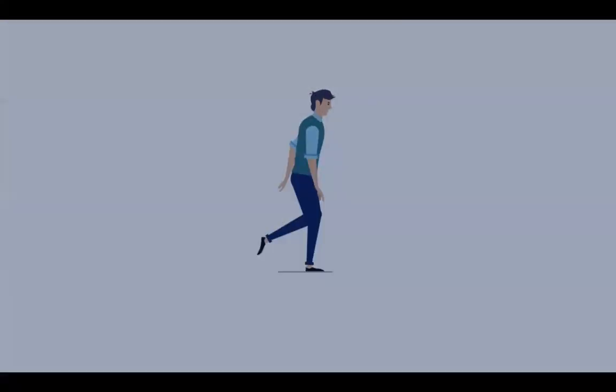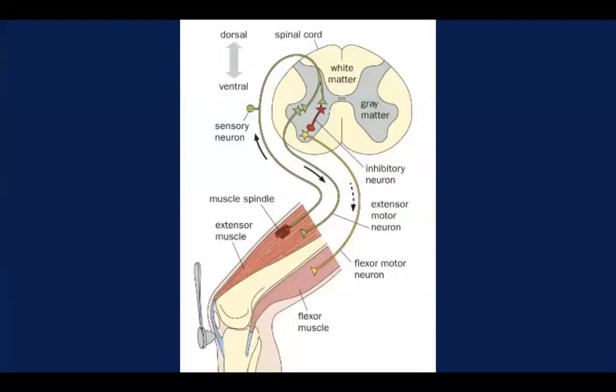The original hypothesis for locomotion, called the chain reflex hypothesis, suggested that repetitive or rhythmic movement such as running was caused by sequential sensory inputs to the spinal cord.